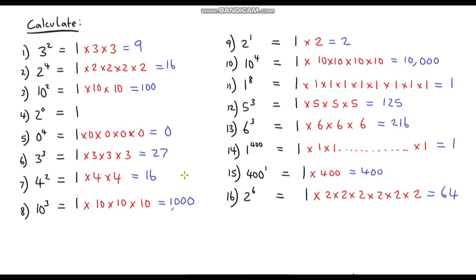Now the biggest misconception people have after learning this topic: whenever you see 4 squared, a lot of people think this is 4 times 2, which is 8 — but it's not. It's 4 times 4. Likewise, 10 cubed — a lot of people think that's 30, but it's not 10 times 3, it's 10 times 10 times 10. That is the biggest misconception people have.